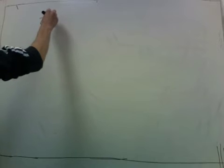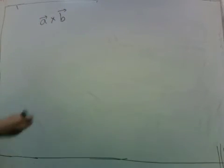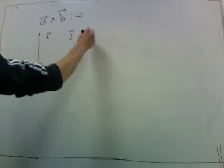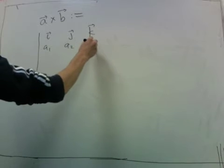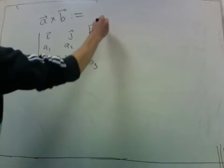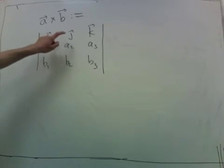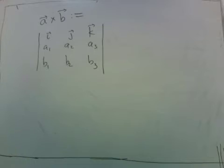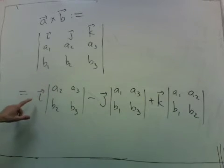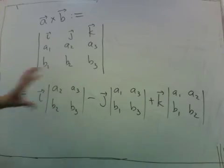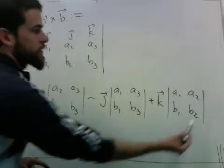Without further ado, the formula for the cross product A cross B is given by the following determinant. It might look strange because the top row contains the vectors i, j, and k rather than numbers, but we apply the same symbolic formula. The first component of the result comes from the i term, the second component is the negative of the j term, and the third component comes from the k term.